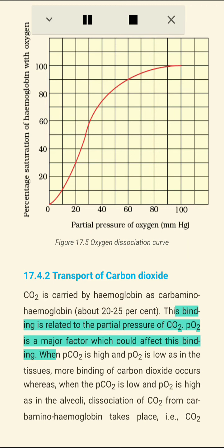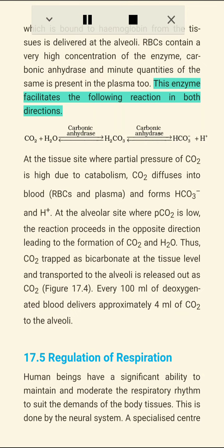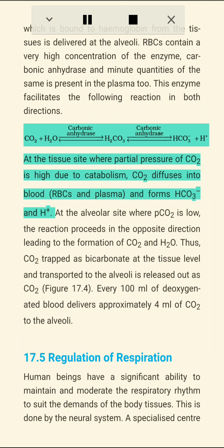Section 17.4.2: Transport of Carbon Dioxide. CO2 is carried by hemoglobin as carbaminohemoglobin — about 20 to 25 percent. This binding is related to the partial pressure of CO2; pO2 is a major factor affecting this binding. When pCO2 is high and pO2 is low, as in the tissues, more binding of CO2 occurs. When pCO2 is low and pO2 is high, as in the alveoli, dissociation of CO2 from carbaminohemoglobin takes place. RBCs contain a very high concentration of the enzyme carbonic anhydrase, which facilitates the relevant reactions in both directions.